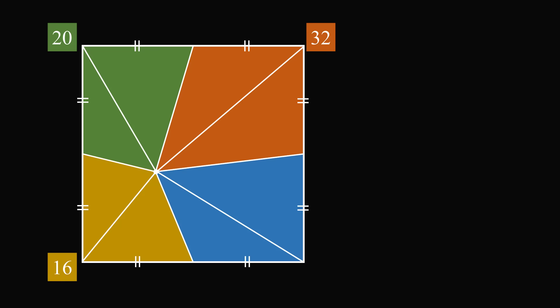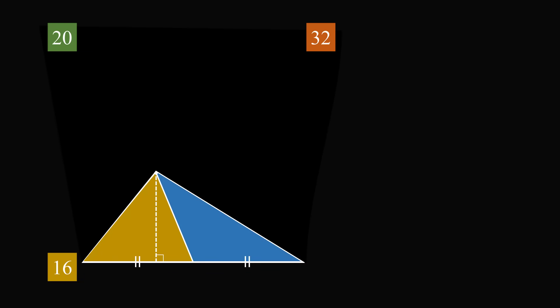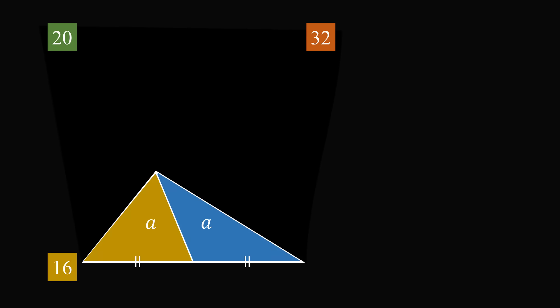Let's focus on the two triangles along the base of the square on the bottom side. They are divided at the midpoint of the side, so these two bases have equal length. Each triangle also has exactly the same height. Therefore, these two triangles have equal areas. Let's denote these areas by the letter A. So both of these regions have an area equal to A.